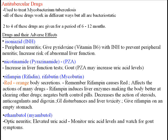Next is ethambutol. Look for optic neuritis — that would be decreased visual acuity and loss of red-green color discrimination. Patients should have visual testing done before starting the medication and every two to four weeks while receiving it. Also check for elevated uric acid, monitor those levels, and watch for symptoms of gout.